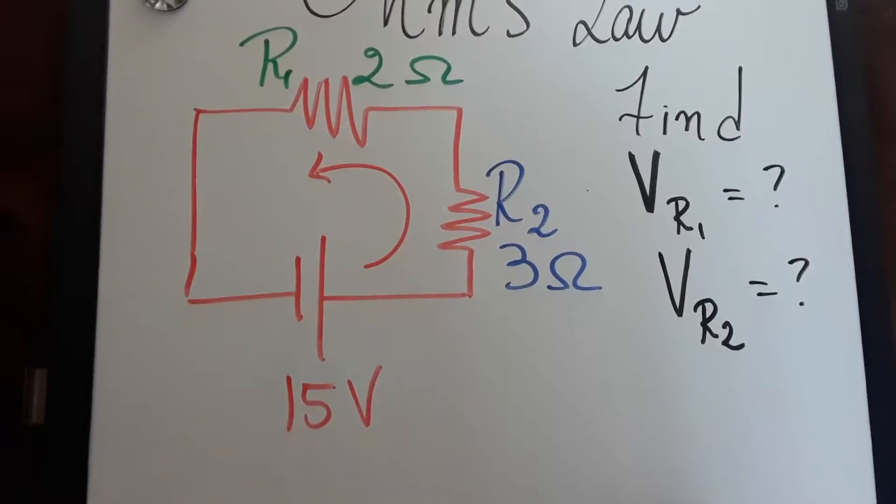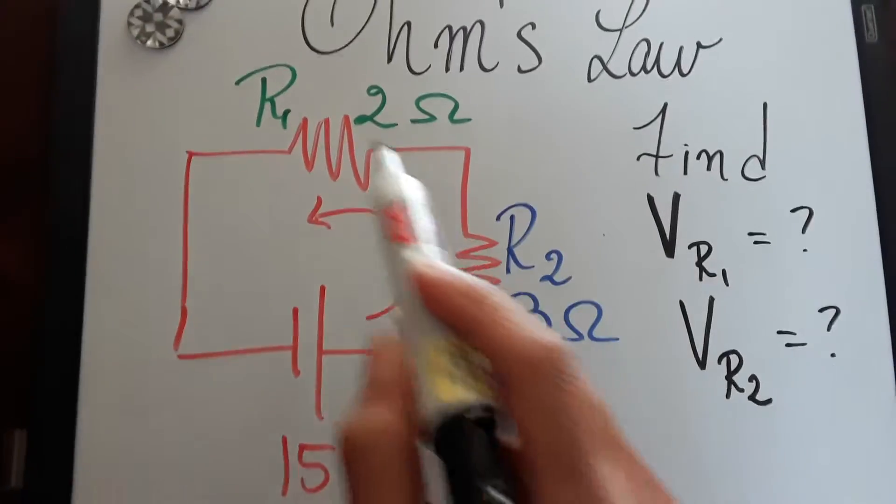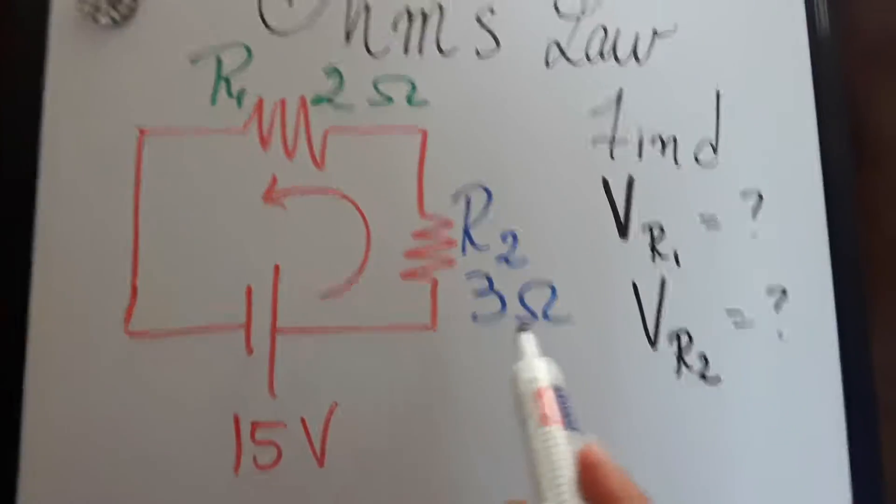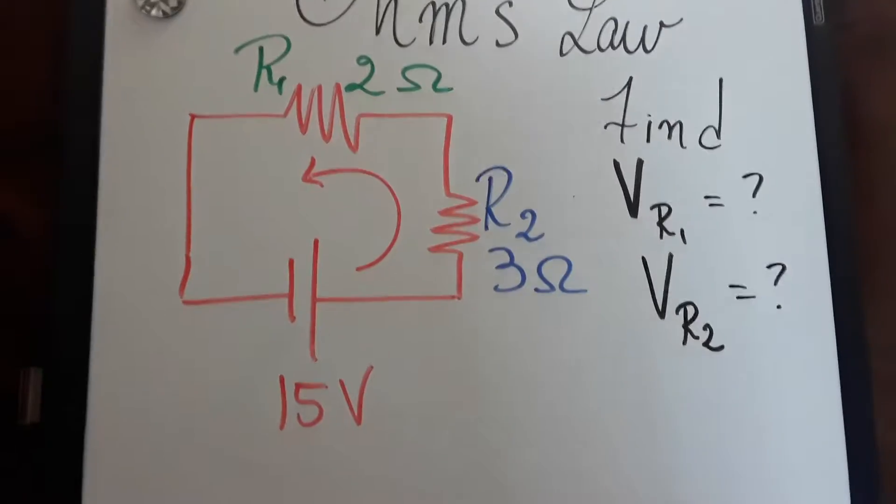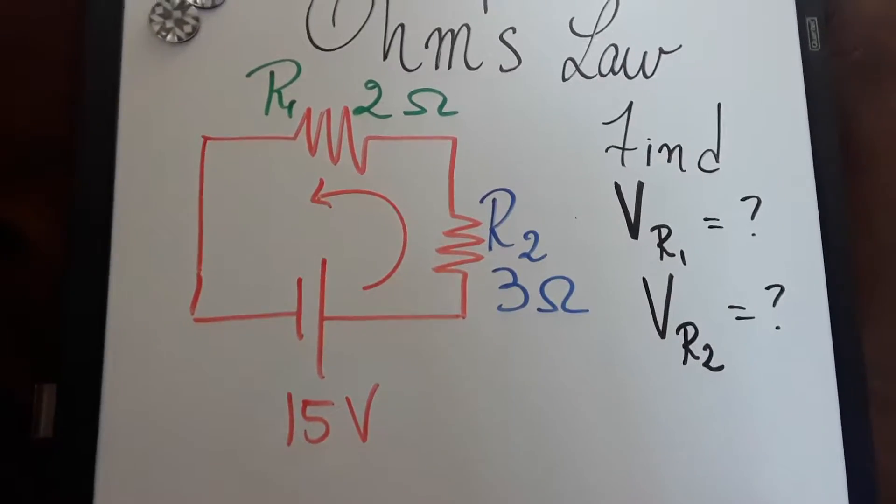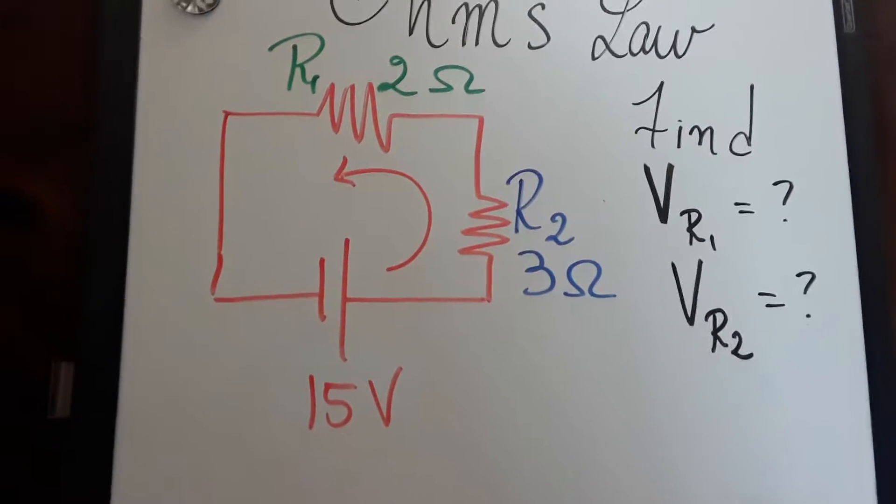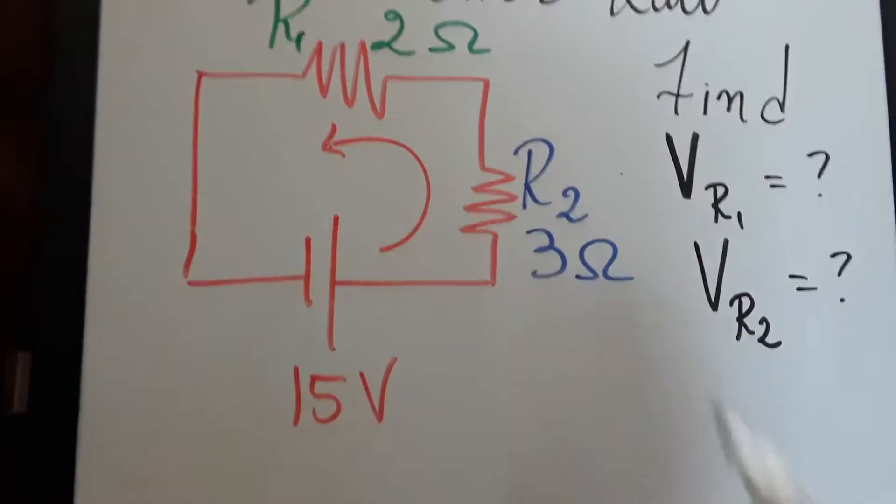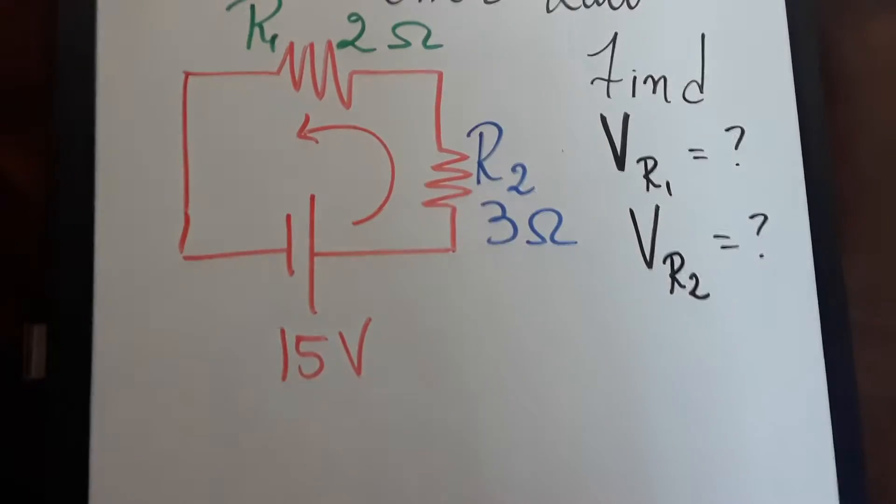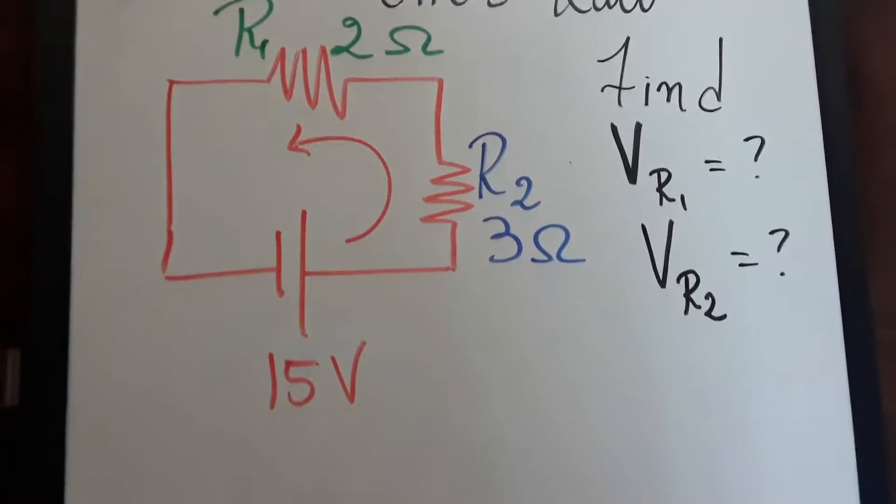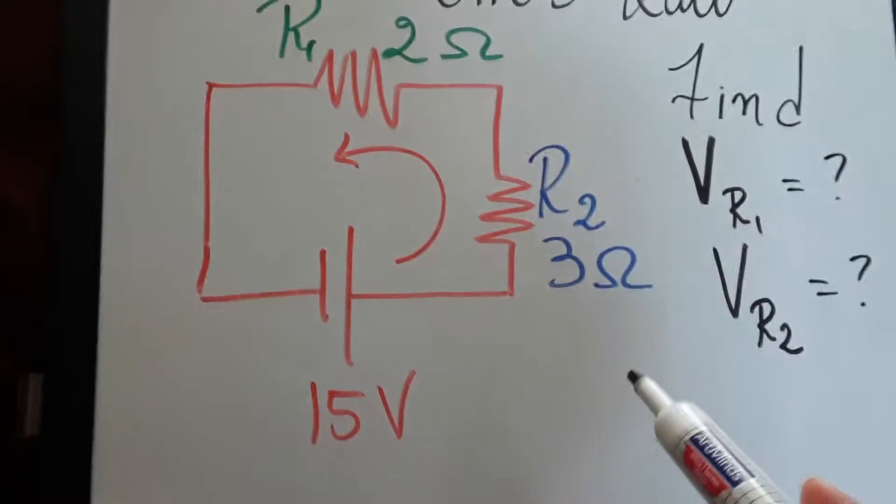And we're told we have to find the voltage across R1 and the voltage across R2. So how can we do this if we have no current to find voltage across R1 or R2? Well, first we can find the current through this whole circuit.